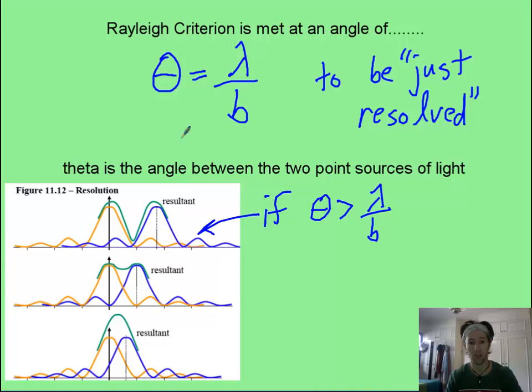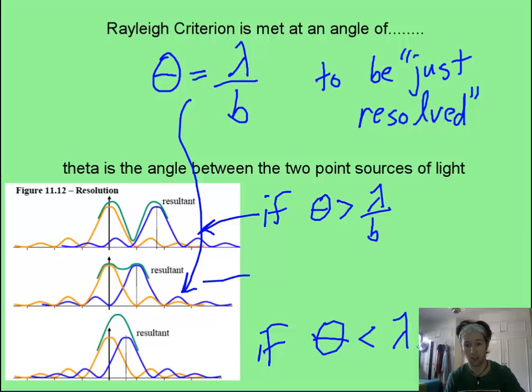If it's equal to, you get this, that's your just resolved. And if they get closer together, that means the angle is steeper. They're harder to resolve. The angle is less than lambda over b, and you cannot resolve them. And you would be sad. You just get one blur.